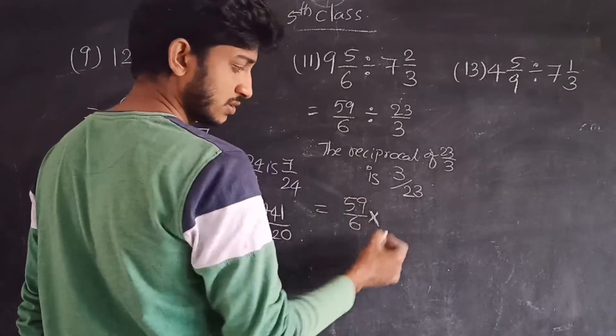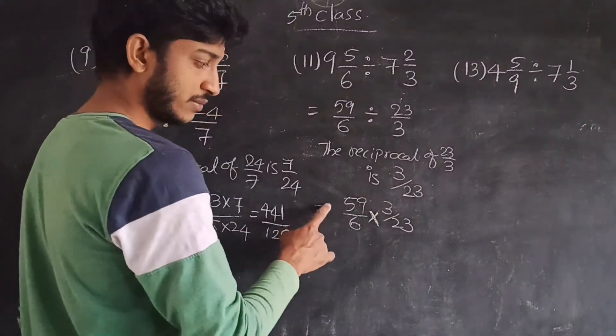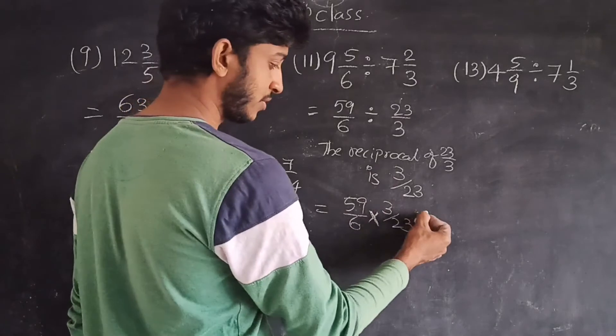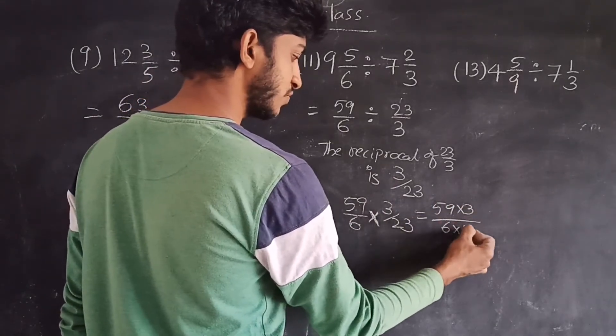So 59 by 6 into 3 by 23. Multiply means numerator into numerator and denominator into denominator. So 59 into 3 divided by 6 into 23.